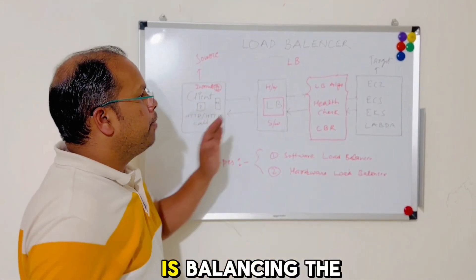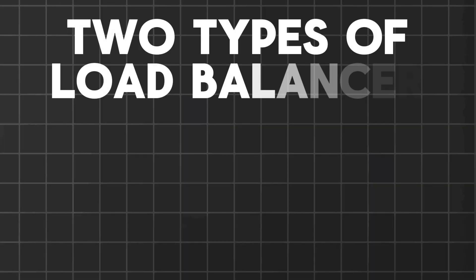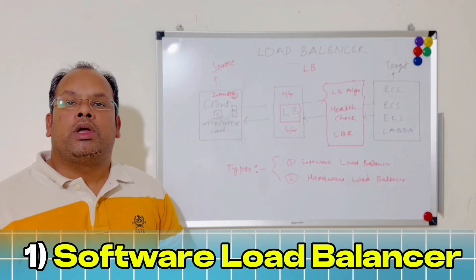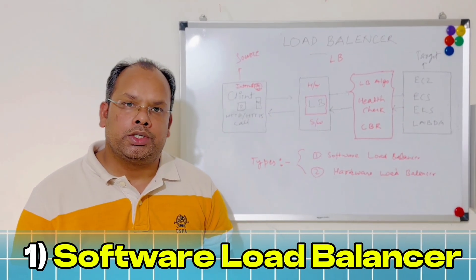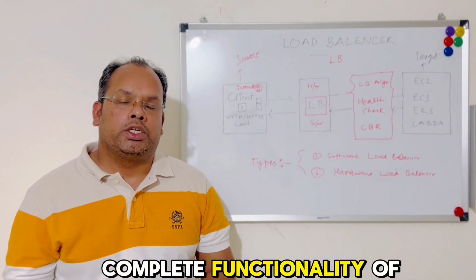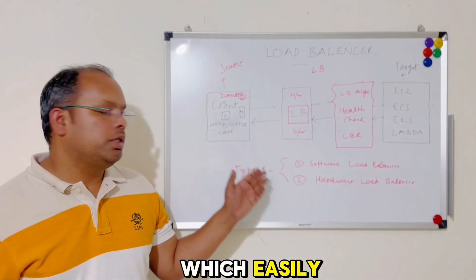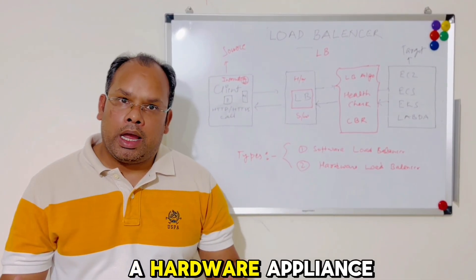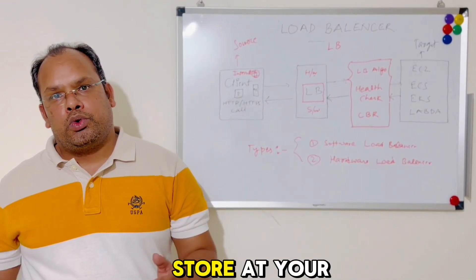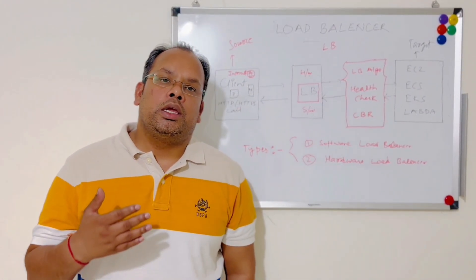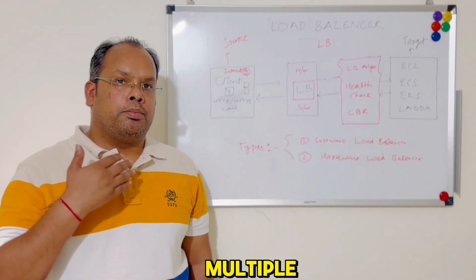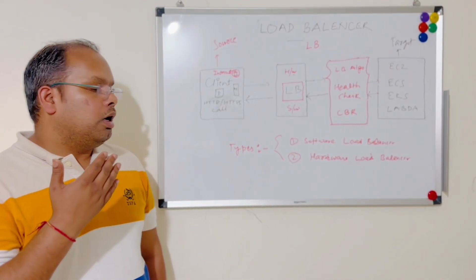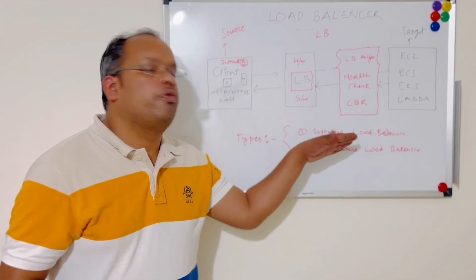There are two types of load balancer: software load balancer and hardware load balancer. A software load balancer is a software application that provides complete load balancing functionality, which you can easily install. A hardware load balancer is a hardware appliance stored at your data center. With software load balancers, you can create multiple virtual load balancers using virtualization.